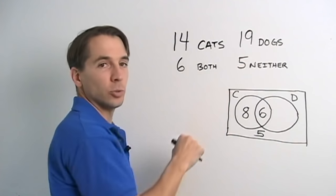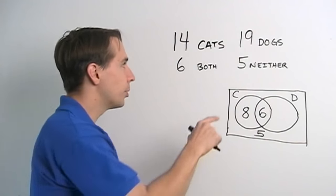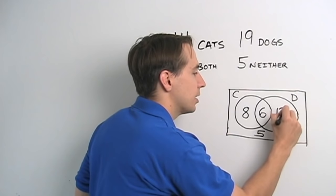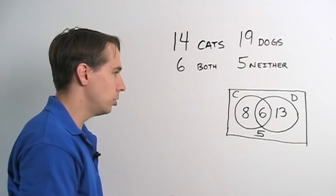Similarly, we have 19 houses with dogs. 6 of them also have cats, have to keep them separate, and that leaves 19 minus 6, 13 houses. These are the real dog people, they only have dogs, no cats allowed.